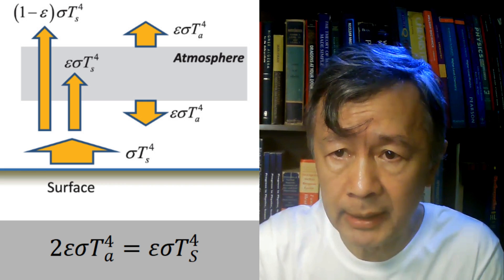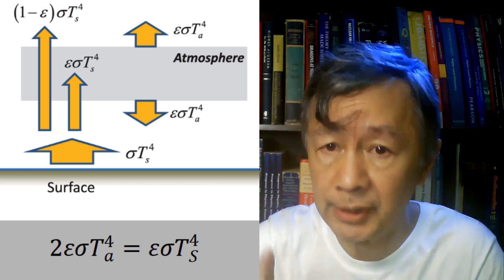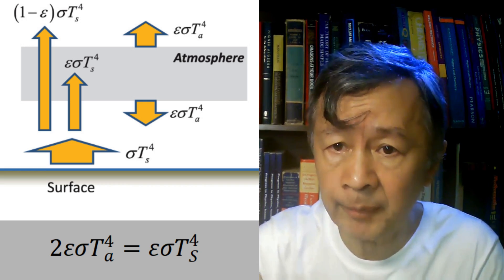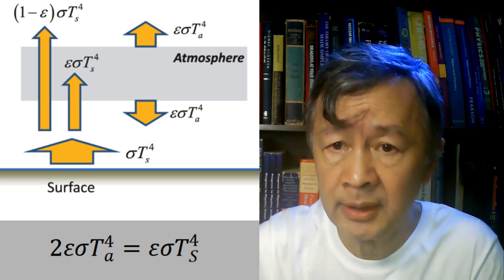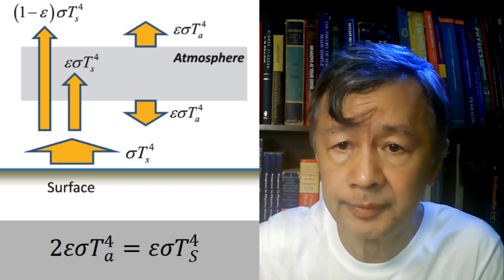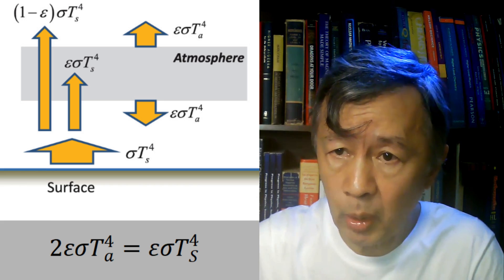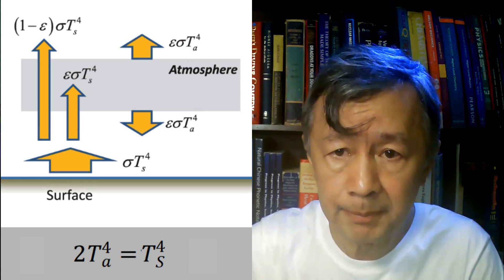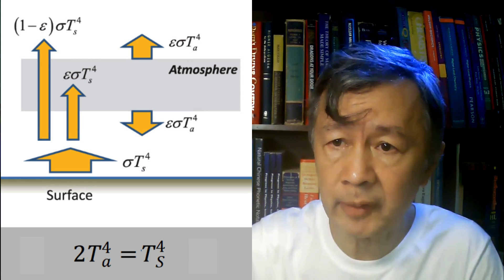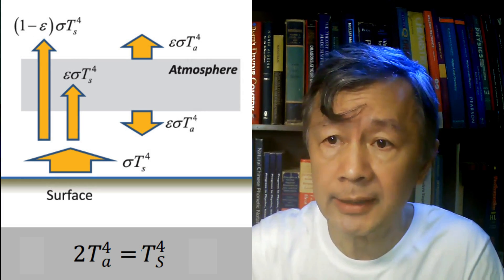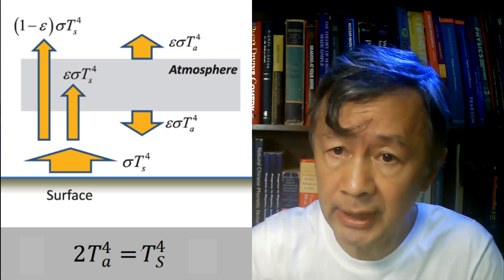Both are powered by its absorption from the surface, namely epsilon sigma T_s to the power of 4. By deleting epsilon and sigma in this equation, it is easy to obtain this dependence of the atmospheric temperature TA on the surface temperature TS.